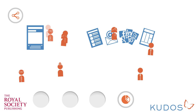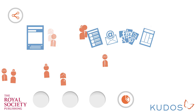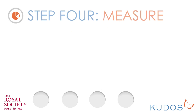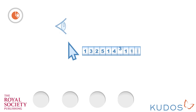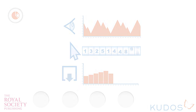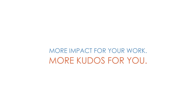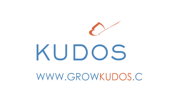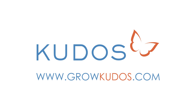Now here's the exciting bit — Step 4: Measure. With QDOS you can see the impact of this on your publication metrics, such as click-throughs, views, and downloads. More impact for your work, more QDOS for you. Get started now by registering at www.growqdos.com.